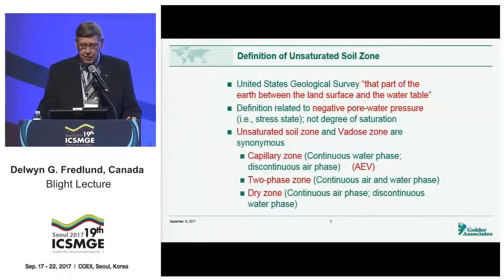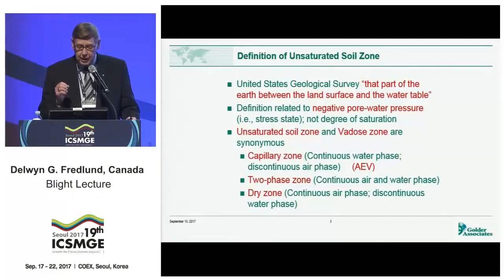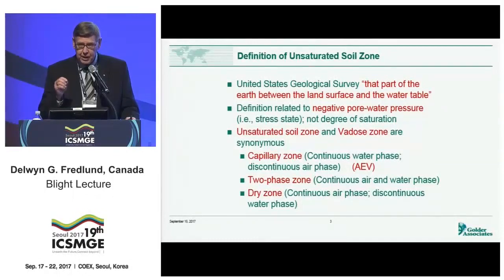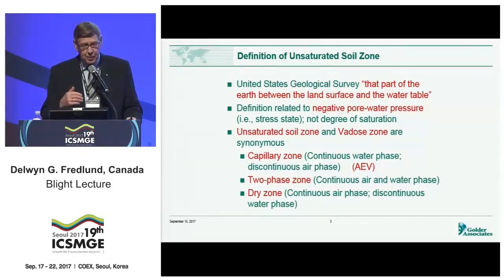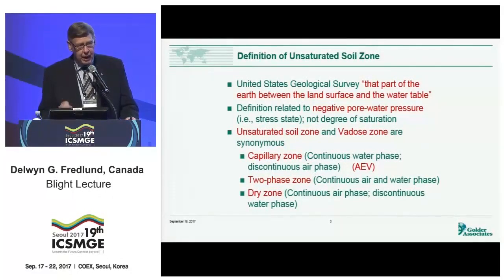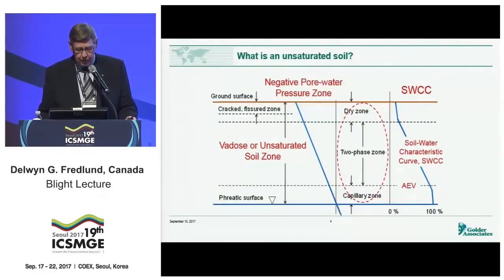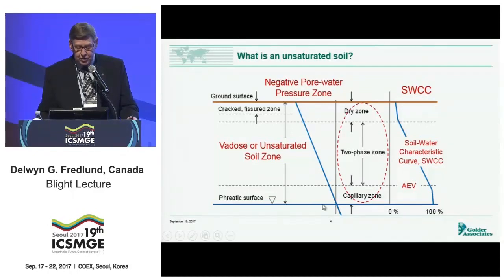Let's start with a very important definition — the definition of the unsaturated soil zone. The United States Geological Survey defines it as that part of the earth between the land surface and the water table. The unsaturated soil zone is thus defined in terms of a stress state in the water phase, which we will talk about as soil suction. It is not defined in terms of a degree of saturation. That unsaturated zone can be subdivided into three main types: the capillary zone, the two-phase zone, and the dry zone.